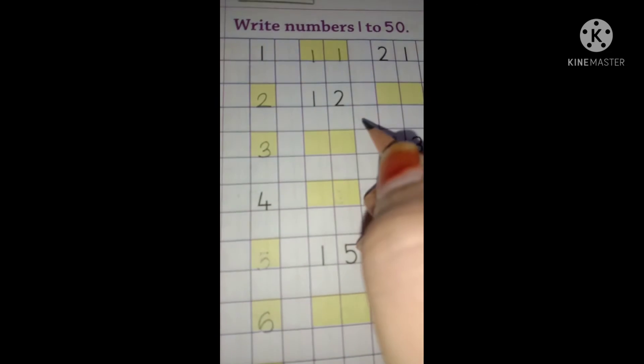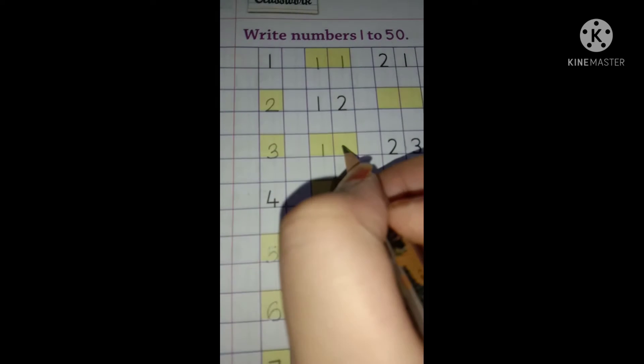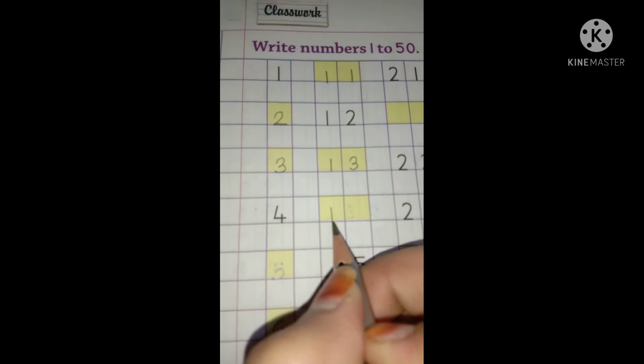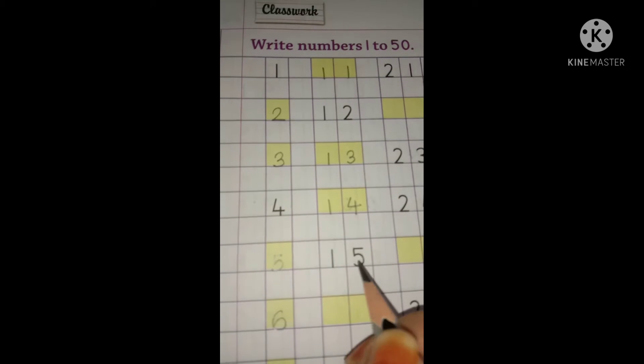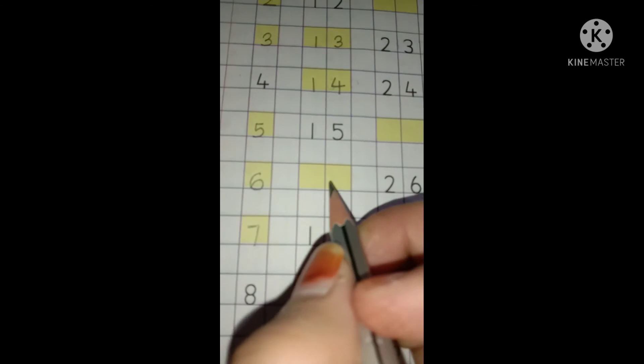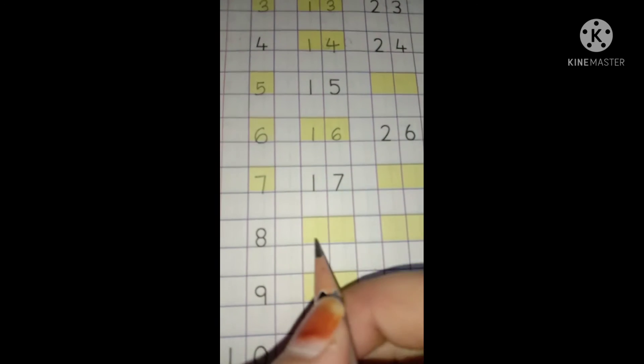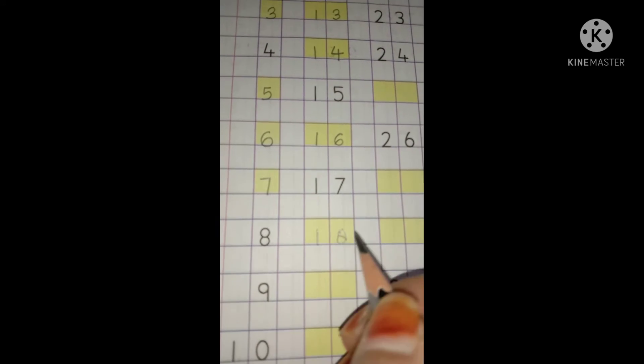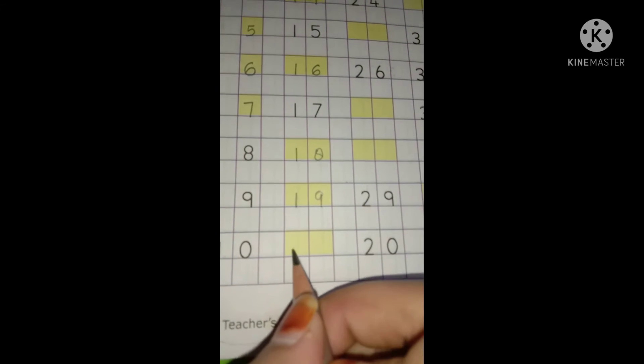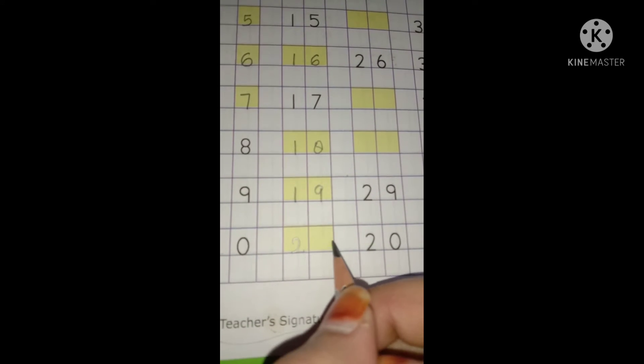Then 12, then 13, 14, 15, then 16, 17, 18, 19, and then 20.